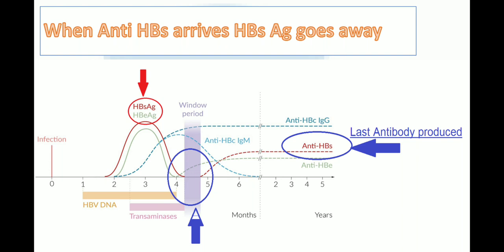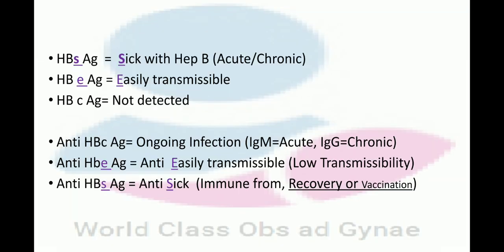Let's revise. HBs antigen means sick for hepatitis, be it acute or chronic. HBe antigen means easily transmissible. HBc antigen is not detected directly. Anti-HBc shows ongoing infection — IgM for acute or IgG for chronic type. Anti-HBe means anti-easily transmissible, or low transmissibility. Anti-HBs means anti-sick — immune from or recovery from vaccination. All these things come in order.